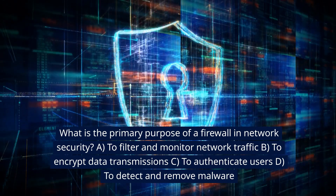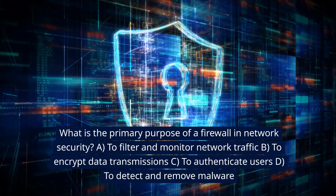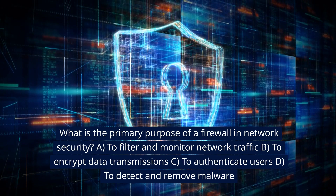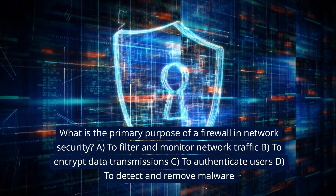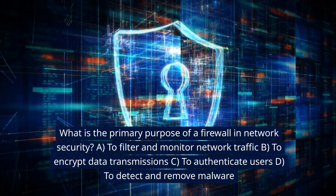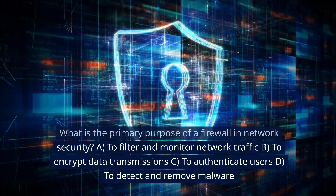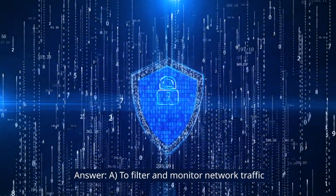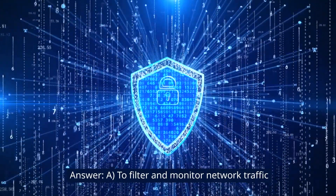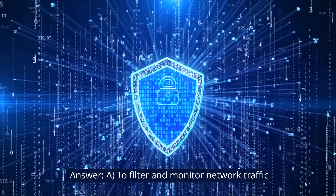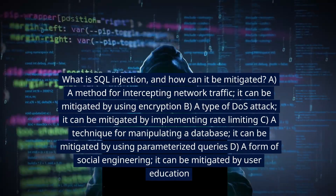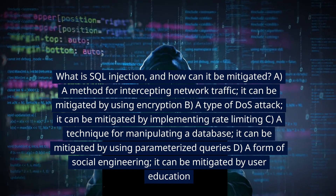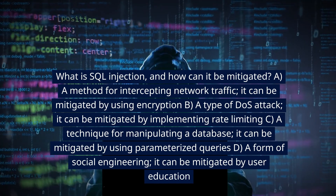What is the primary purpose of a firewall in network security? A. To filter and monitor network traffic. B. To encrypt data transmissions. C. To authenticate users. D. To detect and remove malware. Answer: A. To filter and monitor network traffic.